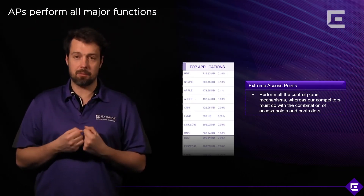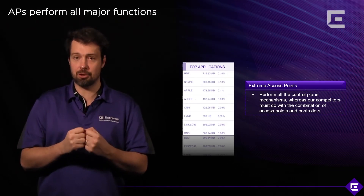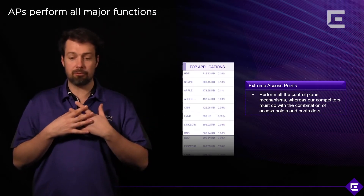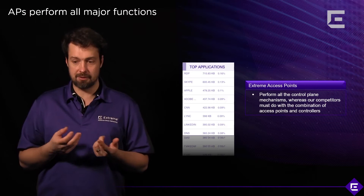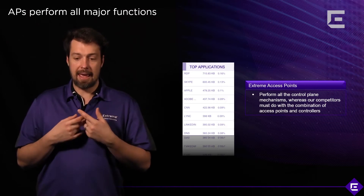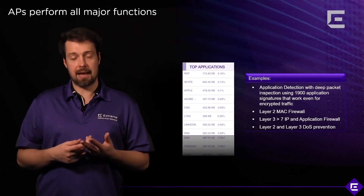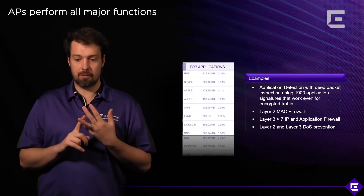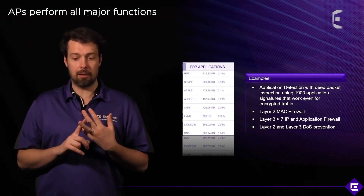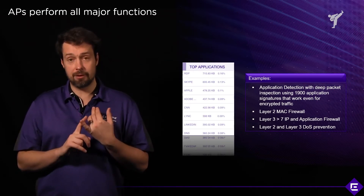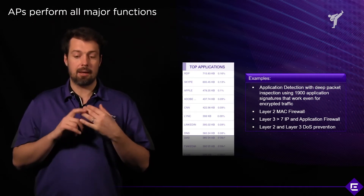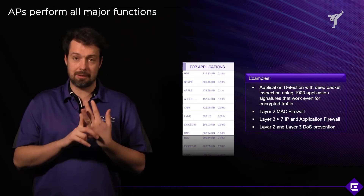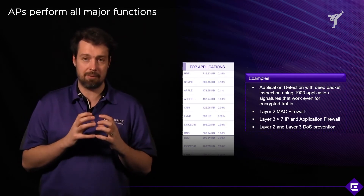The access point performs all the major functions of that network. It will perform all the control plane mechanisms, application detection, deep packet inspection, layer 2 firewalling, layer 3 to layer 7 firewalling, and layer 2 and layer 3 denial of service prevention and detection — they will all be done on the AP.